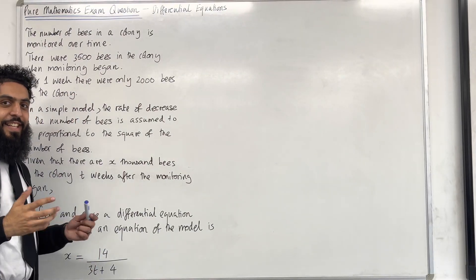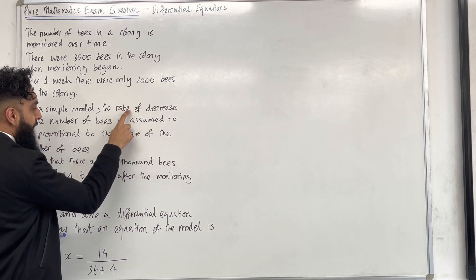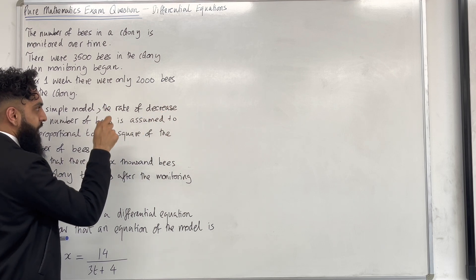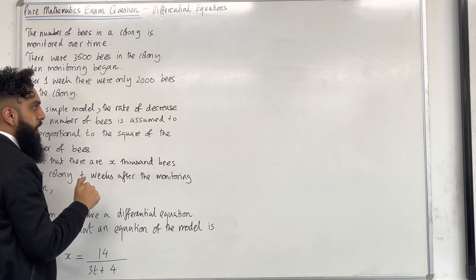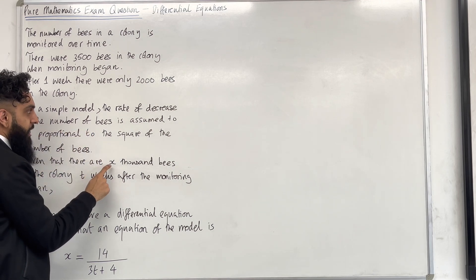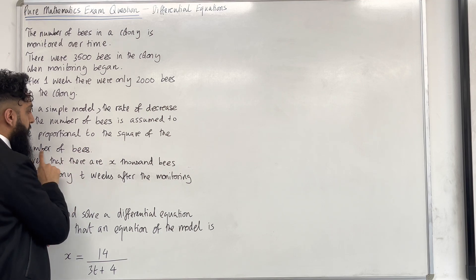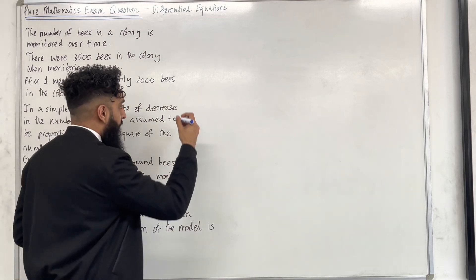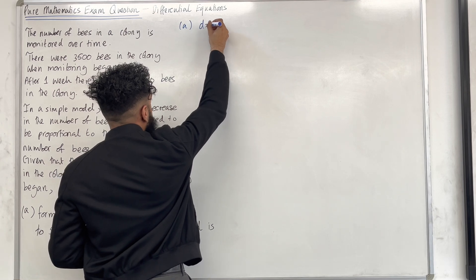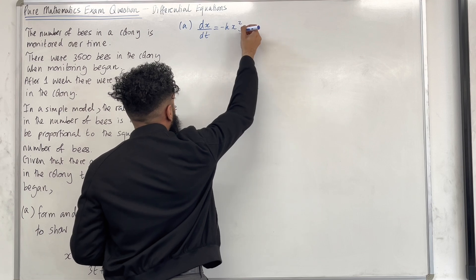Ladies and gents, let's have a look at the solution to part A. In a simple model, the rate — that indicates a differential — of decrease, that indicates that we have to stick a minus in front of the constant of proportionality — in the number of bees, which is represented by x, is assumed to be proportional to the square of the number of bees. So in part A, we can set up a differential equation: the rate of change of x with respect to time has to equal minus k lots of x squared.